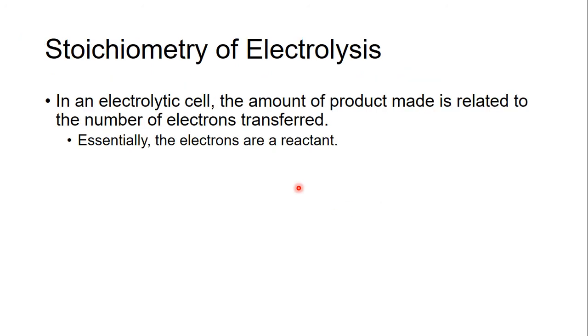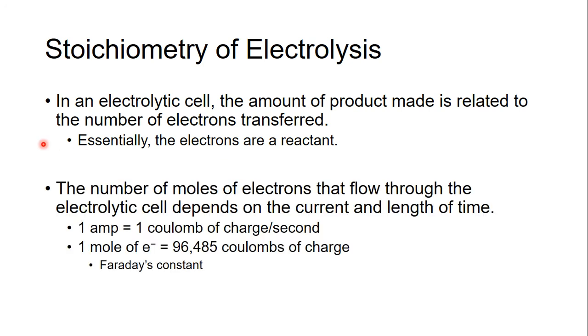When we talk about stoichiometry of electrolysis, remember stoichiometry is just mole to mole ratios. We have to think about electrons being transferred. Electrons are a reactant for electrolysis. We can calculate the number of moles that flow through an electrolytic cell and that's dependent on your current and how long you run it. We measure current in amps. An amp is simply one coulomb of charge per second and a whole mole of electrons is 96,485 coulombs of charge. If you want a whole mole of electrons to go through a cell per second, it would have to be 96,485 amps, which is pretty powerful. This idea of a mole of electrons to coulombs we call Faraday's constant.